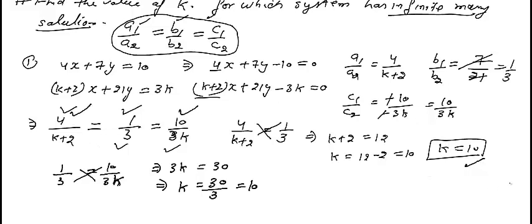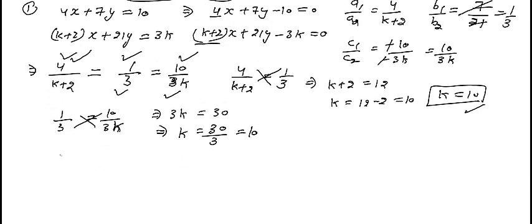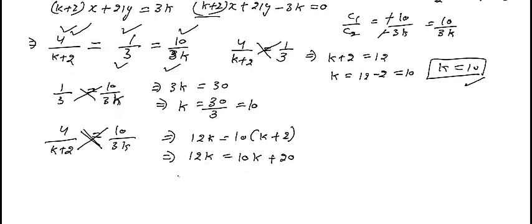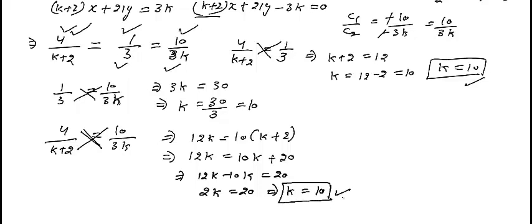Taking A1/A2 equals C1/C2: 4/(K+2) equals 10/3K. Cross multiplying: 12K equals 10K plus 20, so 2K equals 20, giving K equals 10. Very interesting — we are getting the same answer from all combinations. Therefore the value of K is equal to 10.